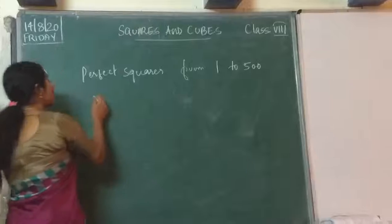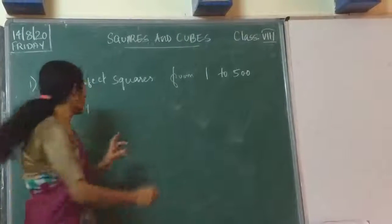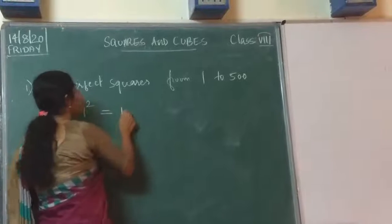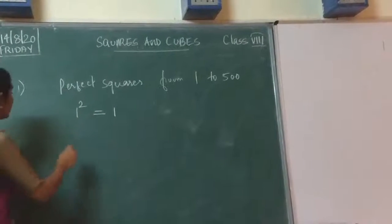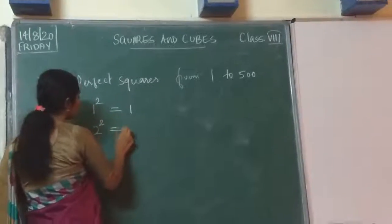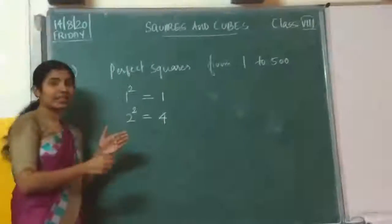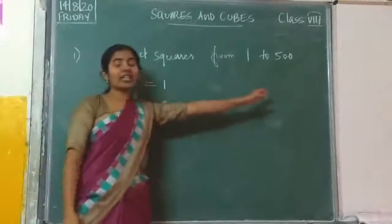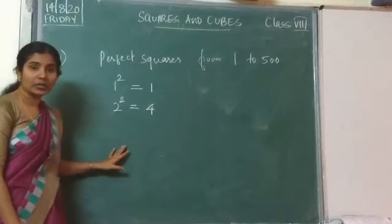So you know the first perfect square is 1, because 1 squared is 1. What is the next perfect square? 2 squared is 4. Like that, write all perfect squares up to 500. From 1 to 500, all perfect squares.